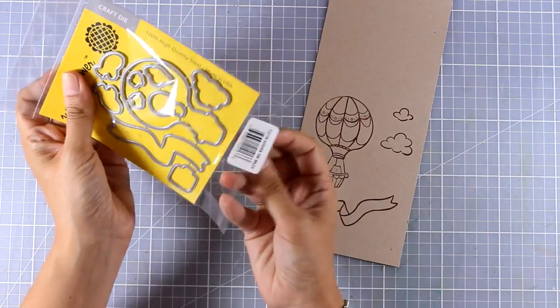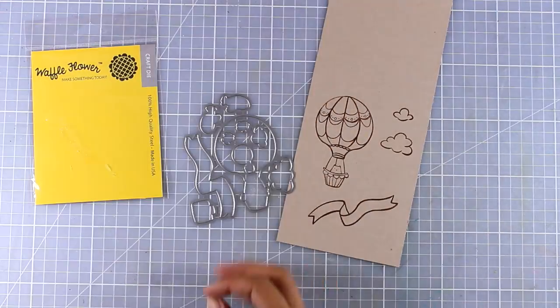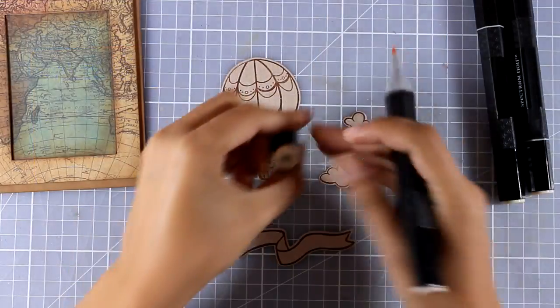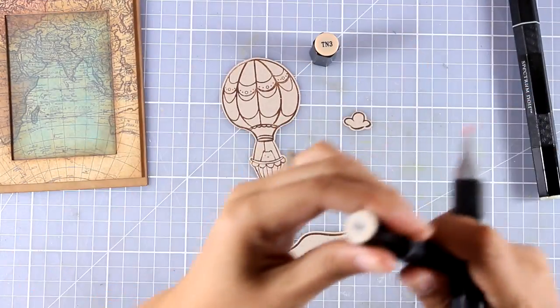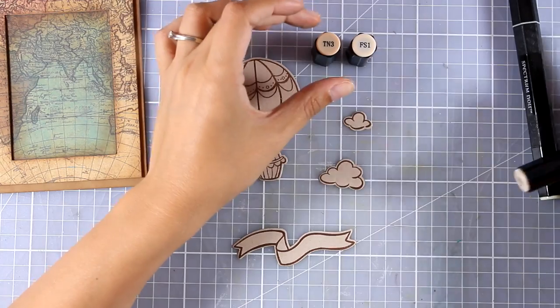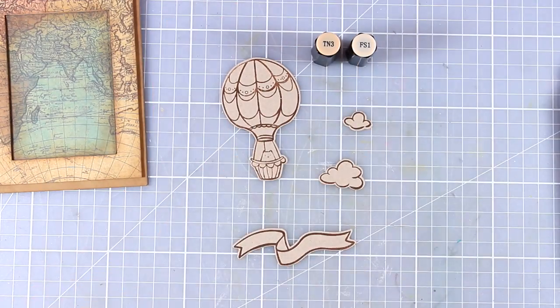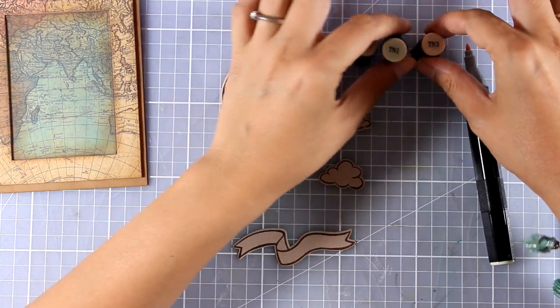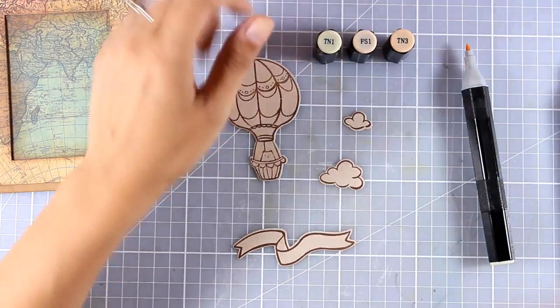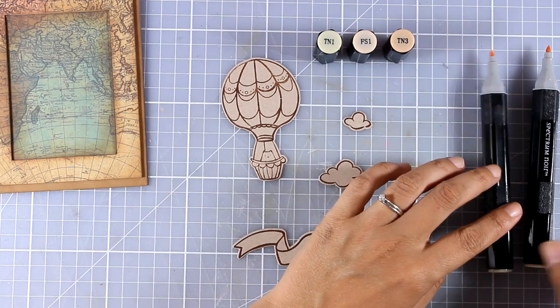I'm going to use the matching dies to cut out everything. These are going to leave a border around the images. If you want to avoid that you can use your scissors, but just because I'm working on craft cardstock instead of white it's not going to look like a sticker. You'll see how I'm going to bring everything together. Now I'm going to use three different colors of markers. I'm using my Spectrum Noirs here and you can see the colors I'm using on your screen.